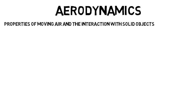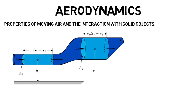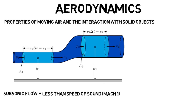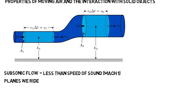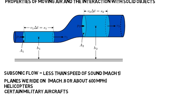So first, aerodynamics is of course where you study the properties of moving air and also its interaction with solid objects. After you go through the basics of fluid mechanics like water moving through a pipe, you get into the actual aerodynamics and you start with subsonic flow, which is air flow that is less than the speed of sound. And the speed of sound is called Mach 1. The planes we ride on, helicopters, and certain types of military aircrafts are all subsonic aircrafts. The planes you go on are typically Mach 0.8 or around 600 miles per hour, while the speed of sound is about 770 miles per hour.